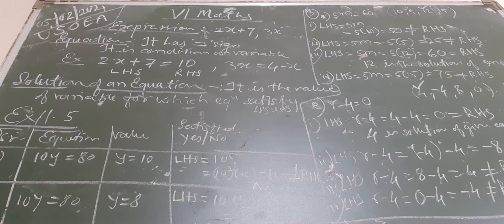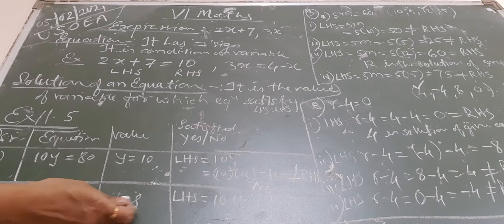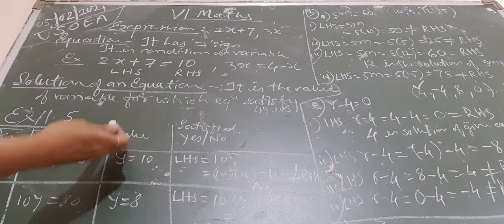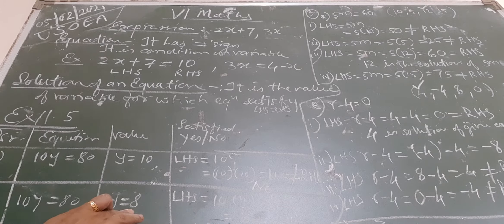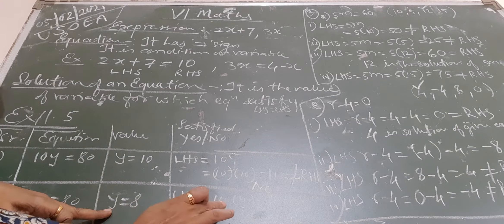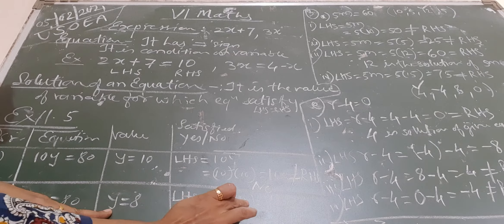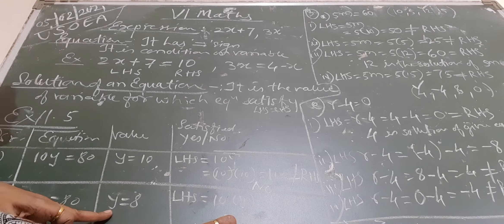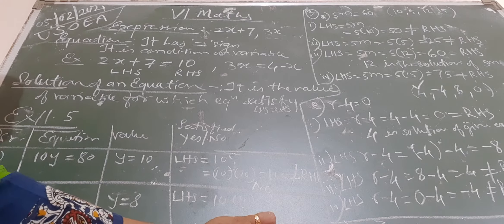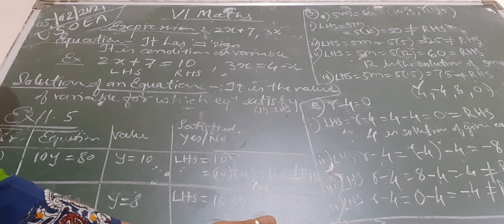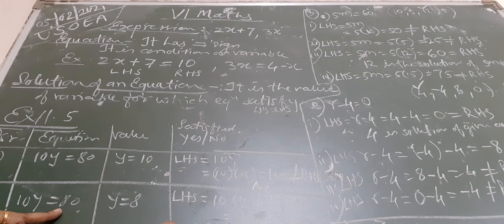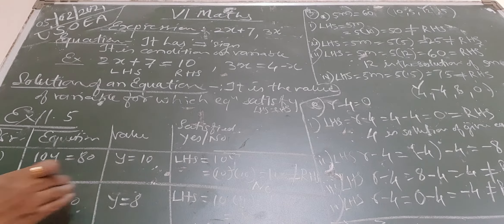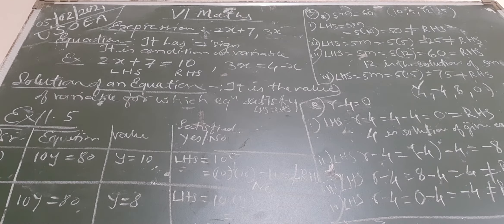Other values are also given, such as y = 8 and different values. For y = 8, then 10 into 8 equals 80, which is equal to the right hand side — 80 is given on the right hand side. So left hand side is equal to right hand side, and hence we can say that the equation is satisfied and y = 8 is the solution of that equation.